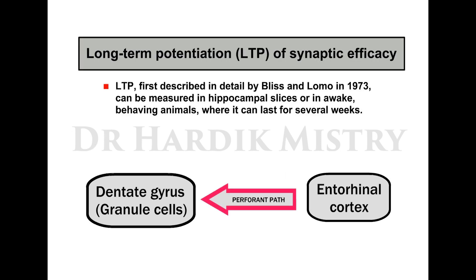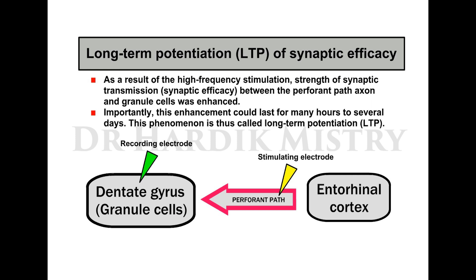Long-Term Potentiation (LTP) of synaptic efficacy was first described in detail by Bliss and Lømo in 1973. It can be measured in hippocampal slices or in awake behaving animals, where it can last for several weeks. In their experiments, a stimulating electrode was placed in the perforant path and recording electrodes in dentate gyrus granule cells. As a result of high-frequency stimulation, the strength of synaptic transmission between perforant path axons and granule cells was enhanced, lasting many hours to several days. This phenomenon is called Long-Term Potentiation.